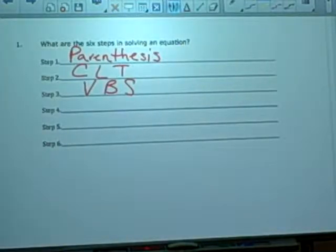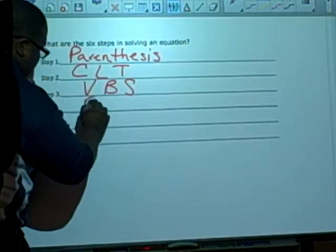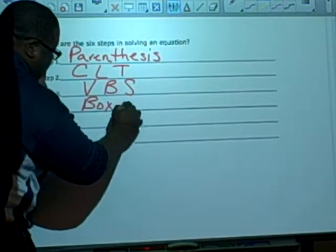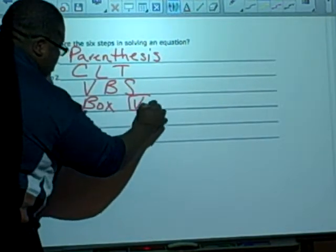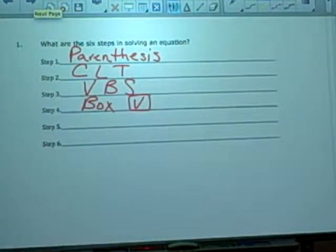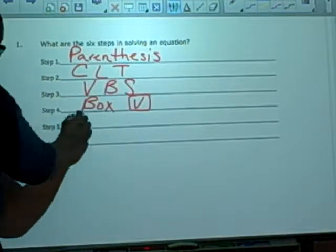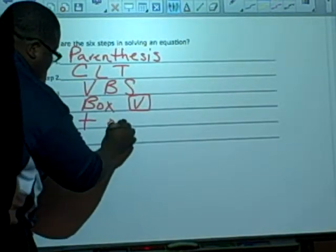Step four, what do I do? Box your variables. I'm going to box my variable. And something that I do, I just draw a line down to equal sign, just to tell me that these sides are separate. Step five, what do I do? Add or subtract. Great. I'm going to add or subtract.